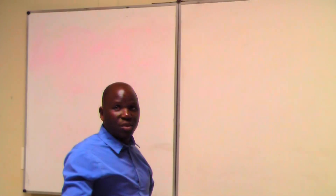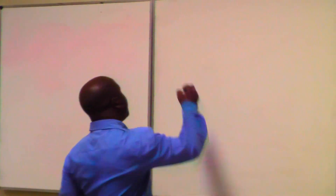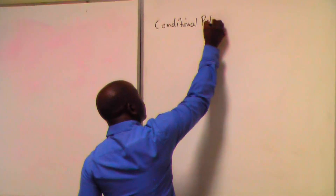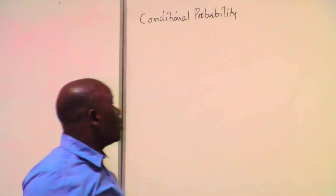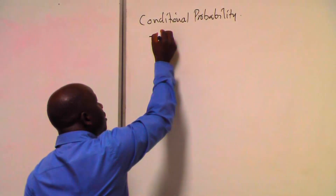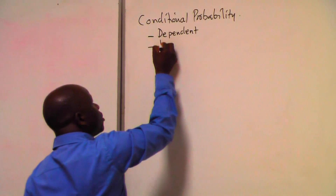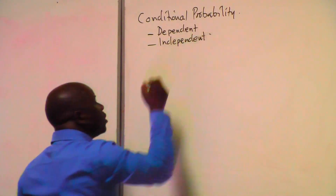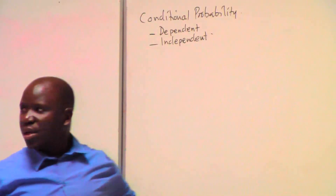Today we want to look at something that is slightly different but almost similar. We are going to look at what we call conditional probabilities. As we look at conditional probability, we also want to define what we mean when we say two events are dependent and also independent. These terms are not new, but we want to put them into the context of probability.